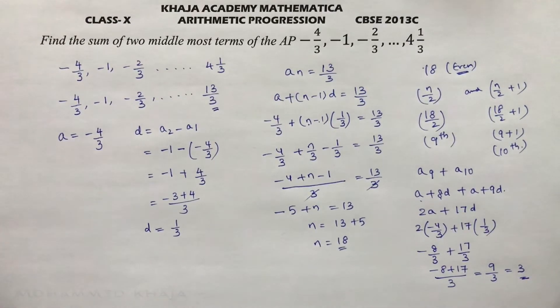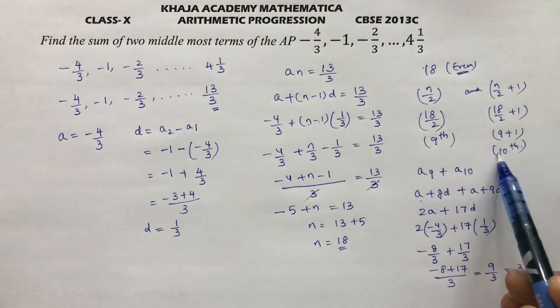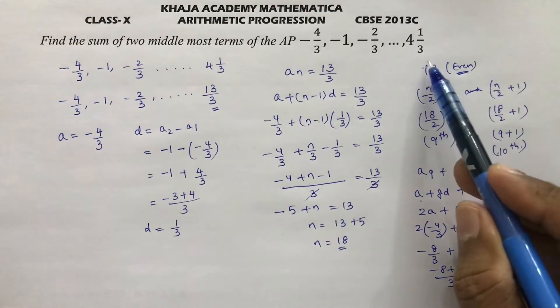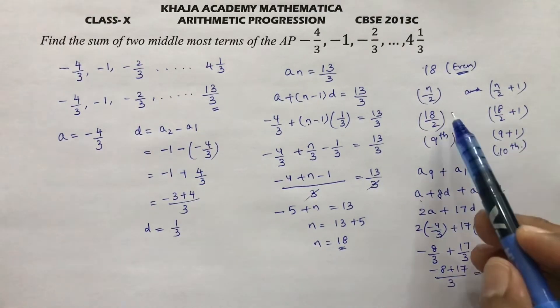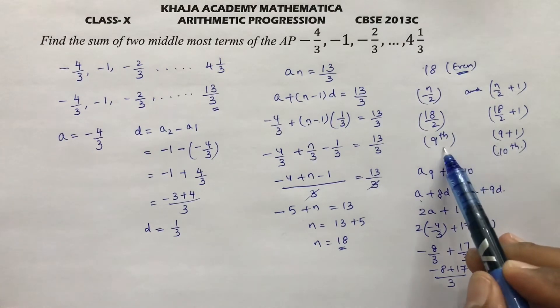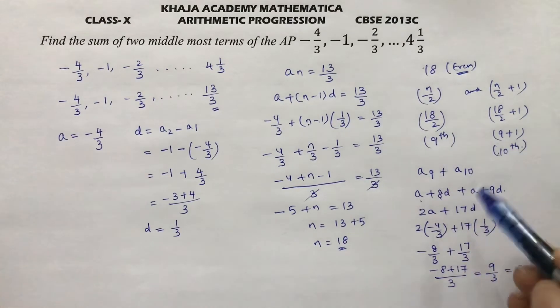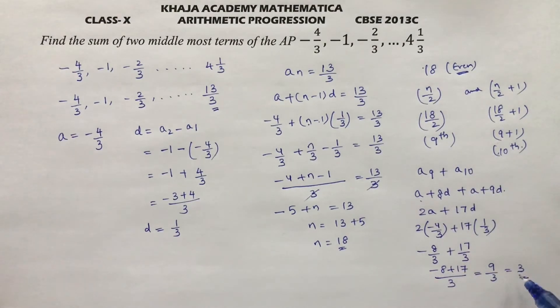So the sum of the two middlemost terms — the 9th and 10th, since there are an even number of observations — is 3. When we add A9 and A10, the answer is 3.